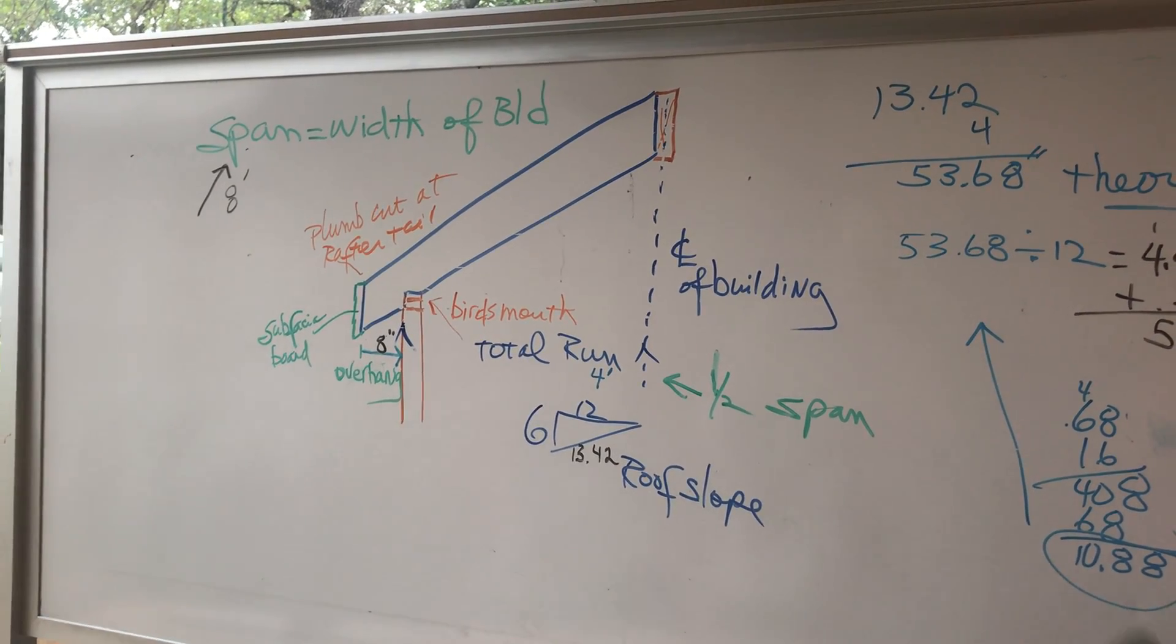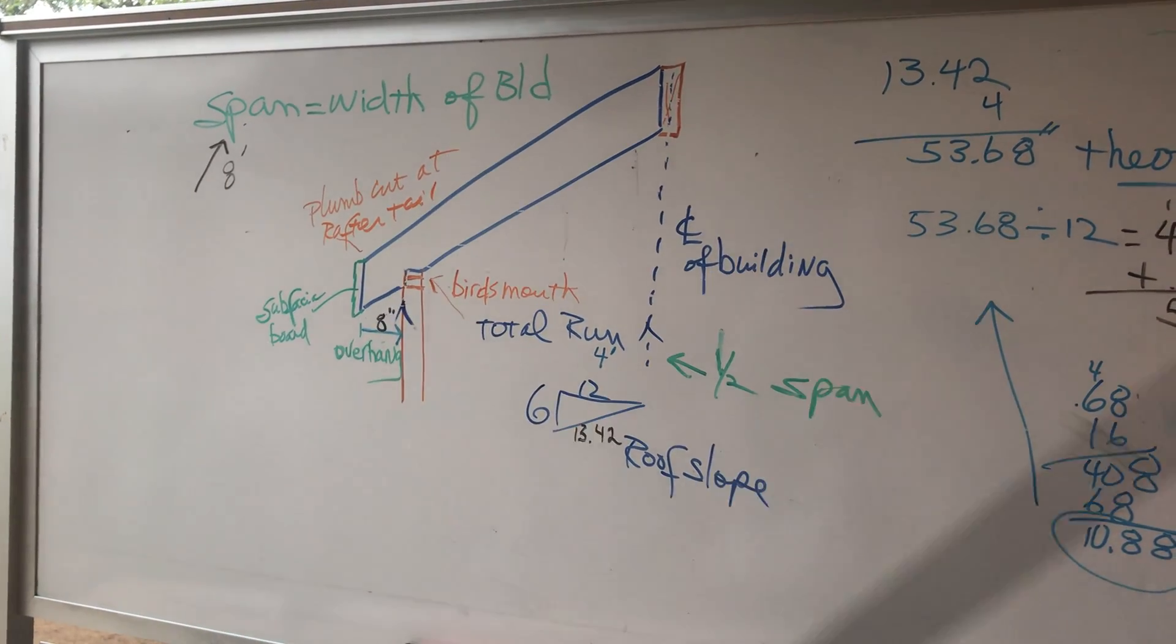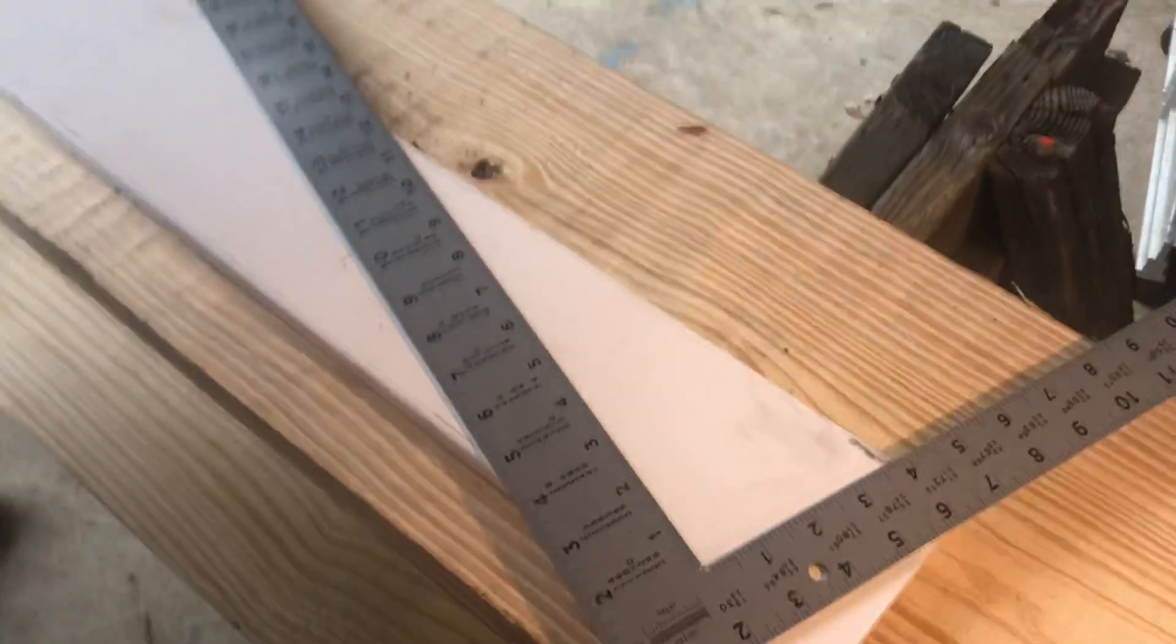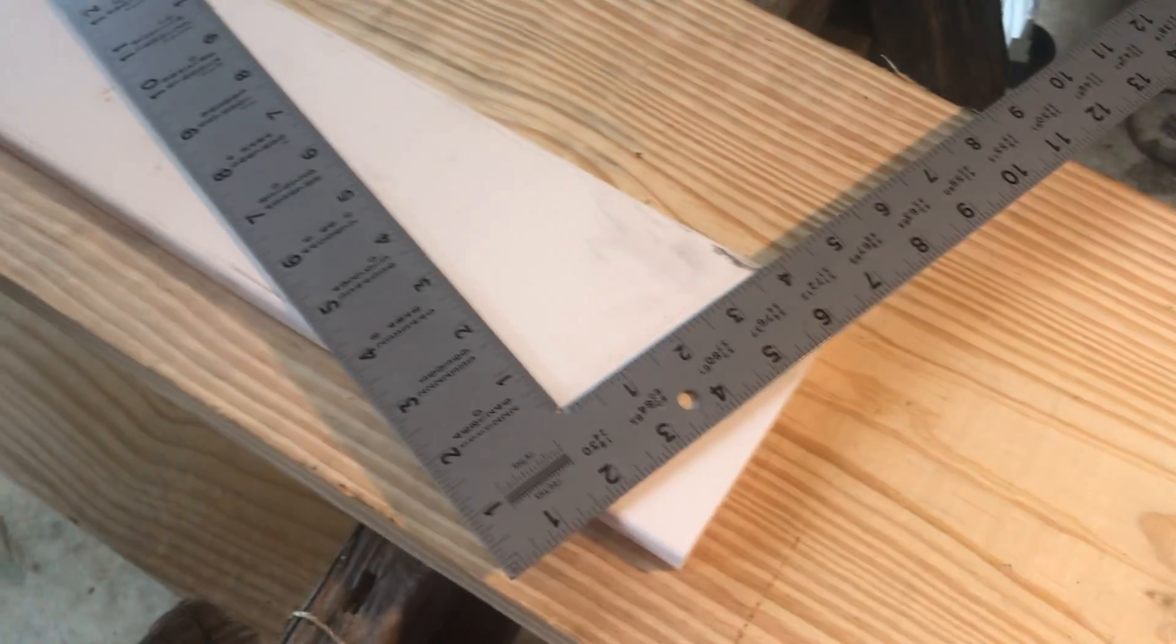I hope that's not too confusing, because roof framing is confusing. So is stair building, so we do the best we can. So we'll go ahead and get started with laying this rafter out using the rafter square.